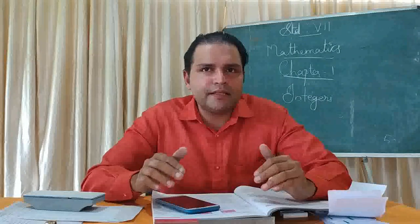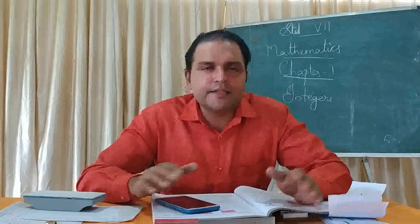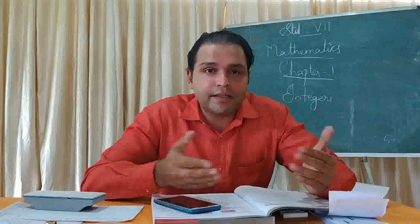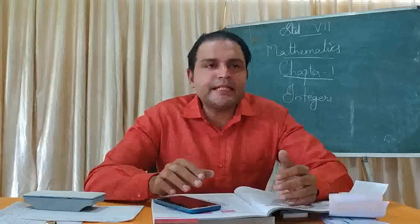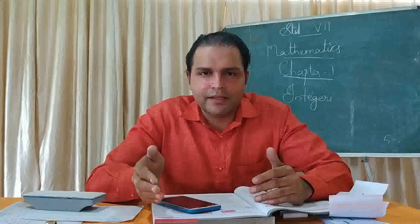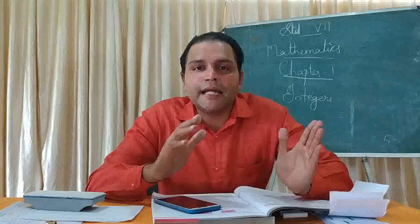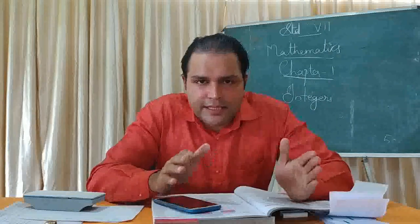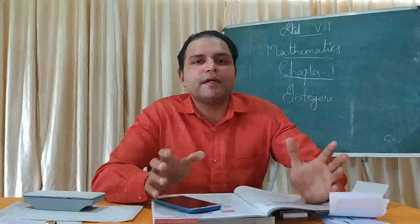Up to 6th standard, you understood the smallest whole number is 0, and there is no number below 0. But in 6th standard, you learned there are some numbers that come below 0, and they are known as negative numbers. Negative numbers means the numbers which are less than 0. And there you studied positive numbers — numbers greater than 0. Together, negative numbers, 0, and positive numbers are called integers.